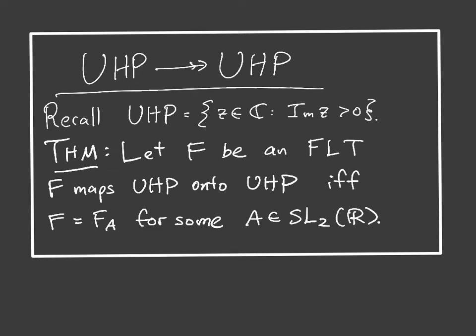Next let's tackle the case of the upper half plane. Recall the upper half plane is just points in the complex plane with positive imaginary part. The main theorem says: let f be a fractional linear transformation. Then f maps the upper half plane onto the upper half plane if and only if f can be represented using a 2 by 2 matrix in SL2R, which means it has real entries and determinant equal to 1.